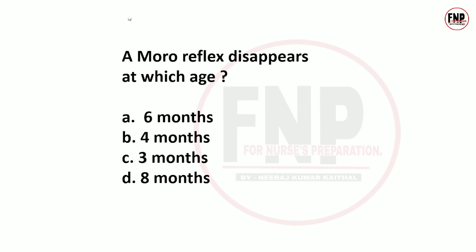Next question: Moro reflex disappears at which age? Options: 6 months, 4 months, 3 months, or 8 months. The right answer is option C — three months. Moro reflex is an infantile reflex.